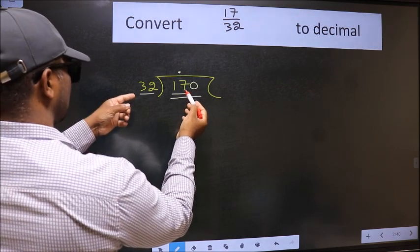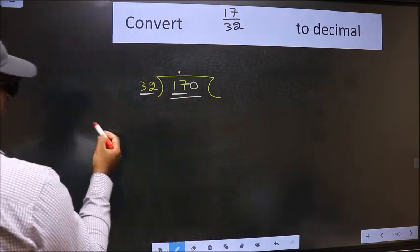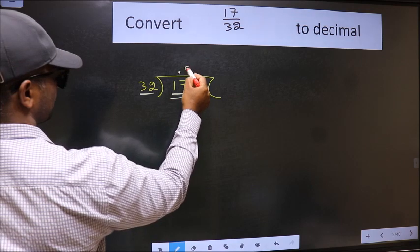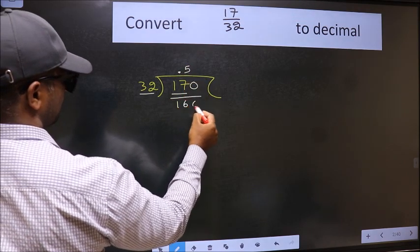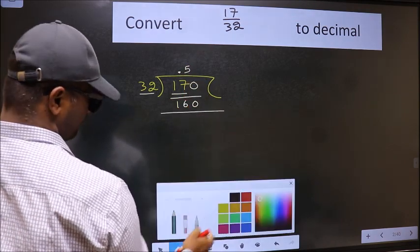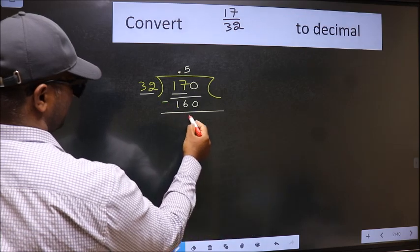A number close to 170 in the 32 table is 32 times 5, which is 160. Now we should subtract. We get 10.